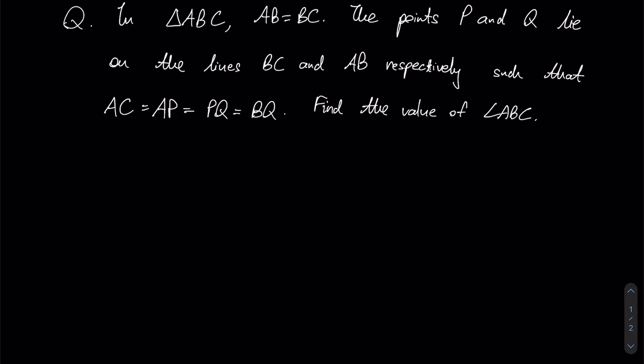Given that we have this triangle ABC where AB equals BC, essentially what we have is an isosceles triangle. So this would be something like what it looks like. I'm going to call this A, B, and C such that these two long sides are the same.